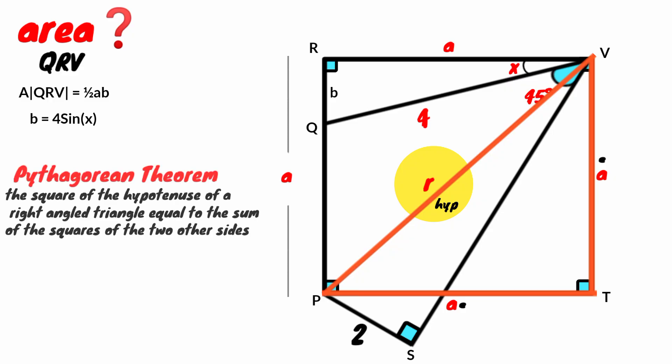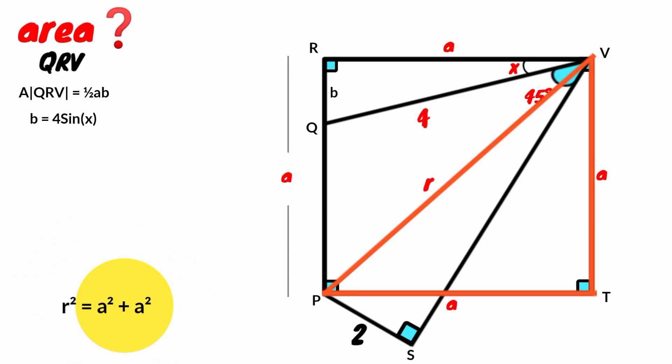We can use the Pythagorean theorem which states that the square of the length of the hypotenuse of a right angle triangle is equal to sum of the squares of the length of the two other sides. So by Pythagoras, R squared equal to A squared plus A squared. A squared plus A squared is 2A squared. So R squared equal to 2A squared.